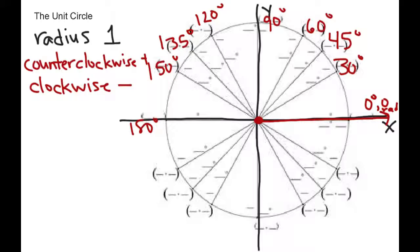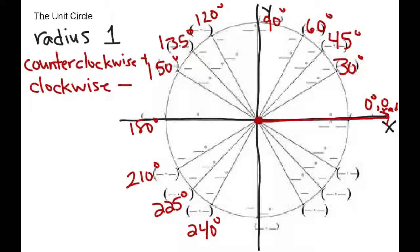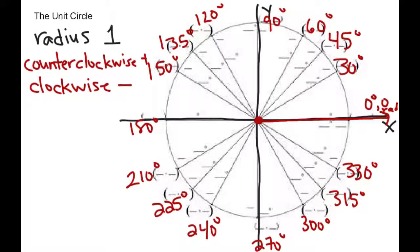Then this is at 180. Remember from geometry that 180-degree angles are just straight lines — so if you start from the initial position and go off in the other direction, that's a straight line. Then you're at 210, 225, 240, 270, 300, 315, 330. And then when you've gone a complete circle, you're back at 360 degrees.